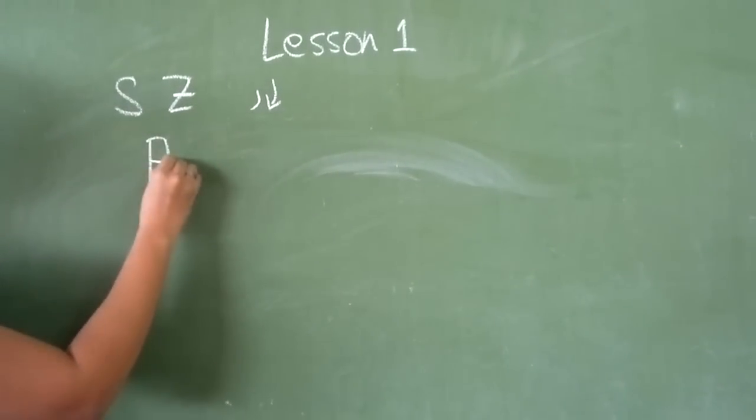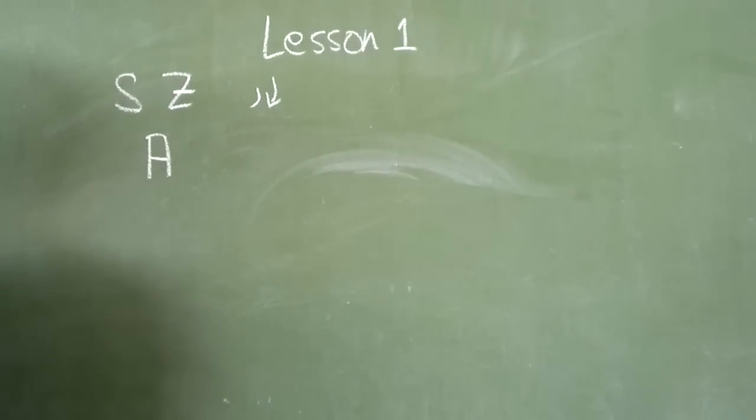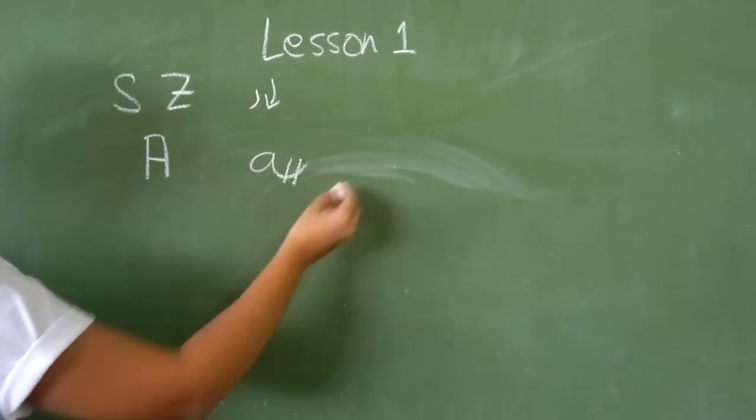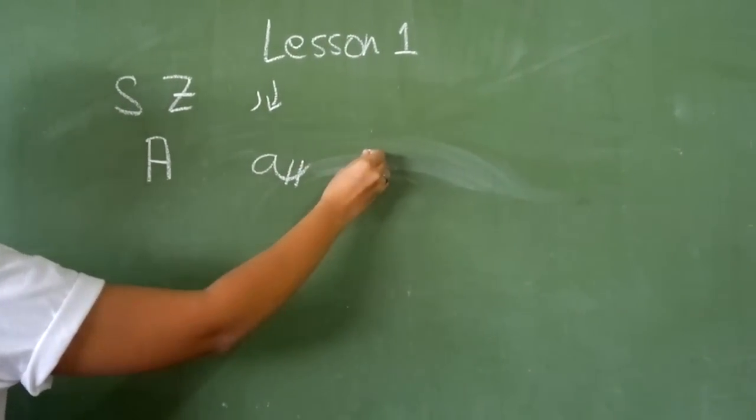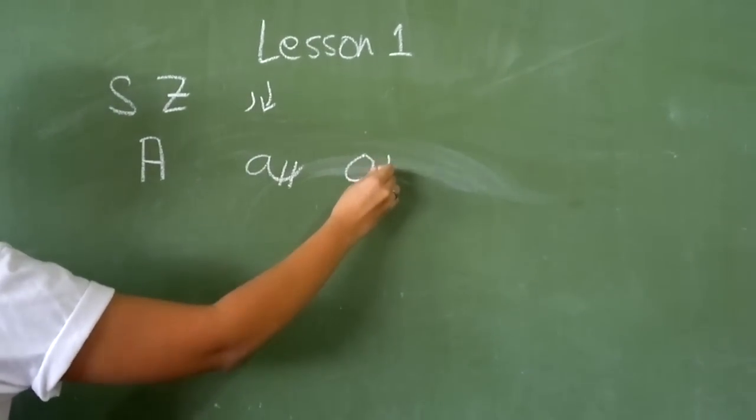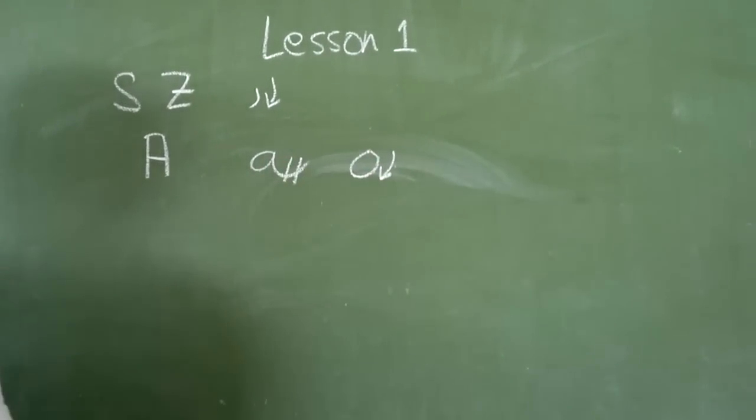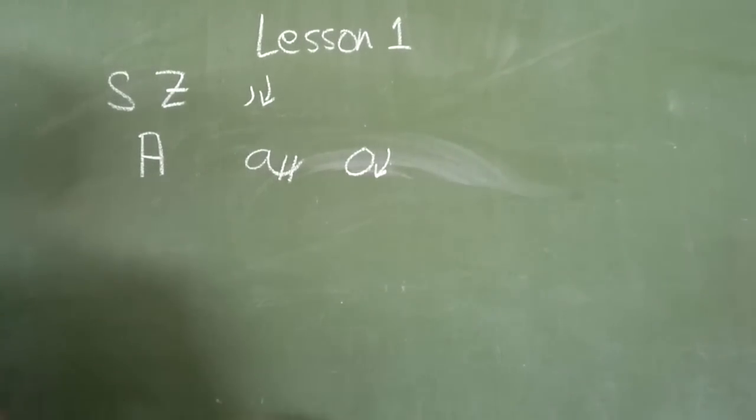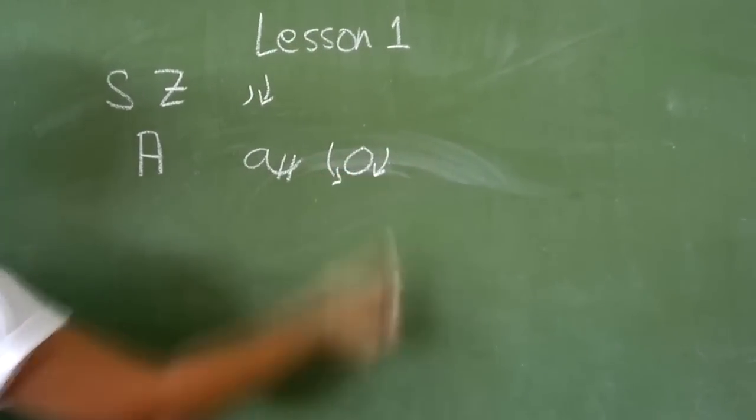Another very important sound in English language is A. A is written as a slightly slanted, medium-sized circle. It is simply the longhand A with the final connecting stroke omitted. Take note the circle may be written in either direction.